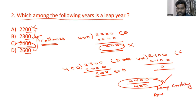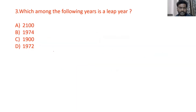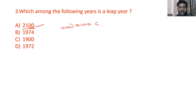2400 is the correct answer for the second category. Now let us move to the practice question: which among the following years is a leap year? Option one ends in two zeros, so it is a century. For 2100 divided by 400: 400 times 5 is 2000, giving a remainder of 100, which is not equal to 0. So 2100 is not a leap year.